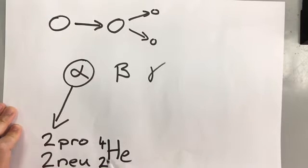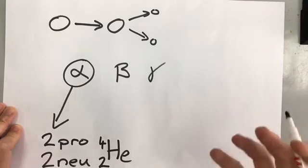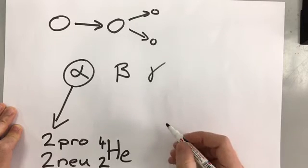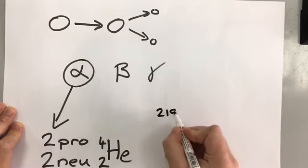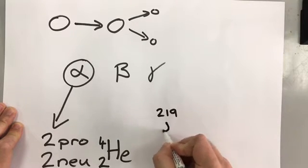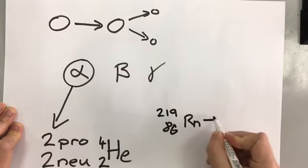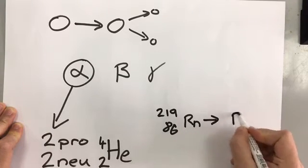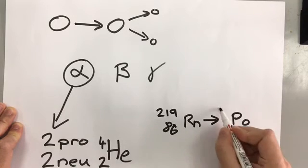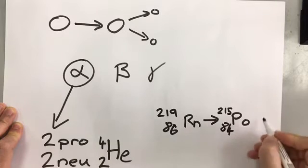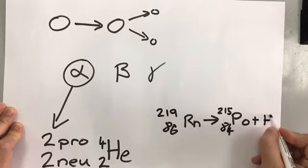If you're emitting protons and neutrons, then the mass and the proton numbers are going to change of that particular atom. For example, if you have radon, that is going to change into a completely different atom,